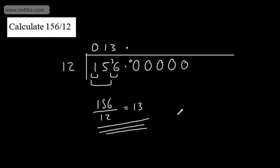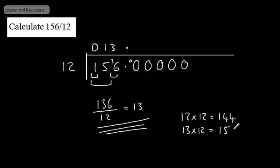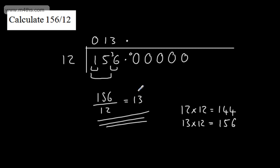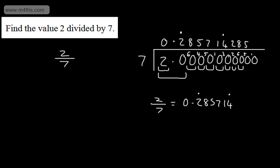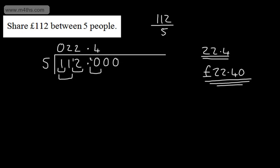Think about this reasonably: 12×12, or 12 squared, is 144. So 13×12 is simply adding another 12, giving 156. You can write the answer as 13.0, but essentially it gives us a whole number or integer value. So that is using short division, or the bus stop method, to divide numbers.